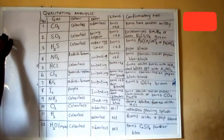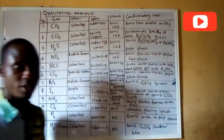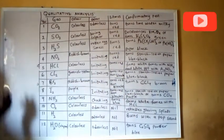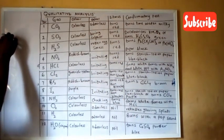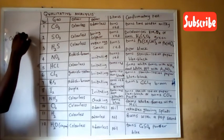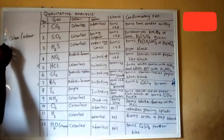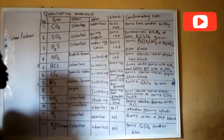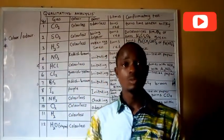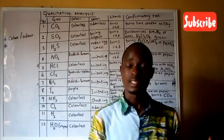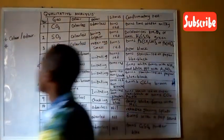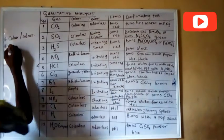The first approach: you first consider the color and odor of the gas. Secondly, you consider the action of the gas on litmus paper. This will differentiate whether it is an acidic gas, basic gas, or neutral gas.